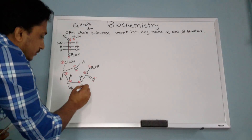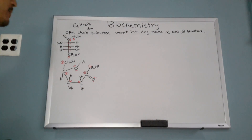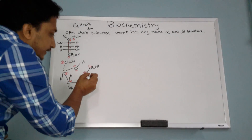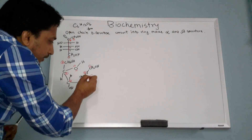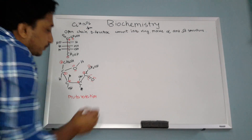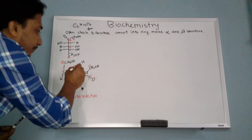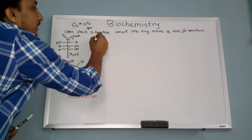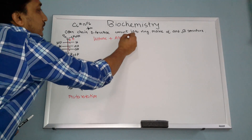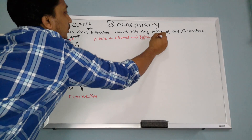There is one important thing to remember: there is a rotation called mutarotation. I will explain why you need mutarotation after I show the mechanism. The formula is: ketone plus alcohol gives us an intramolecular hemiketal.